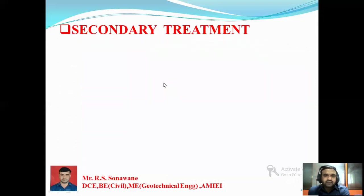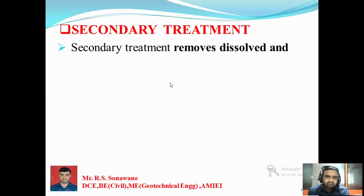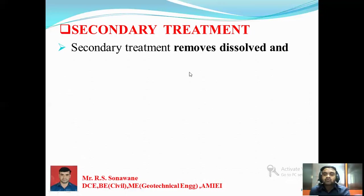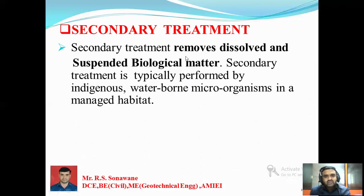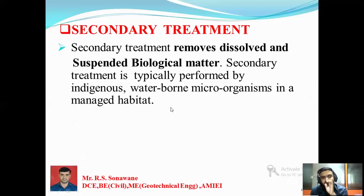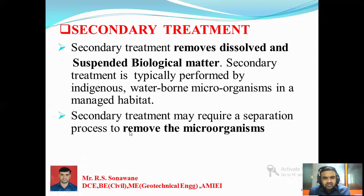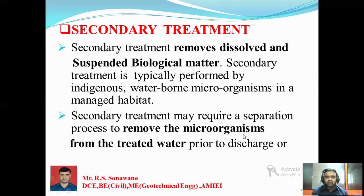In secondary treatment, the second stage removes dissolved and suspended biological matter. It is typically performed by water-borne microorganisms in a controlled habitat. In the secondary plant, microorganisms — bacteria, fungi — are present and can remove dissolved biological matter. A separation process is required to remove the microorganisms from the treated water before discharge to tertiary treatment. One biological unit used is the membrane bioreactor, where bacteria are provided before the membrane, and untreated wastewater passes through the membrane to become treated water.